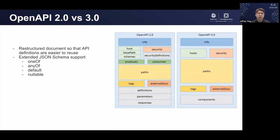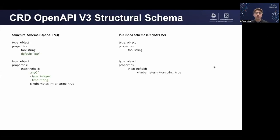This talk is about OpenAPI v3, but let's briefly go over some differences between v2 and v3. OpenAPI v3 is a restructure of v2 that allows reuse of API components and provides new features. The most notable is extended JSON schema support. OpenAPI v3 uses a newer version of JSON schema that supports four additional important fields: one of, any of, default, and nullable. For those familiar with custom resource definitions, OpenAPI v3 is already supported in the structural schema. A schema represents the definition for a particular type, while a specification refers to the entire OpenAPI document, including schemas, paths, and more.